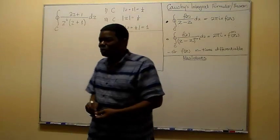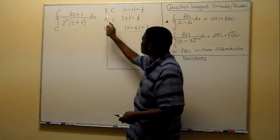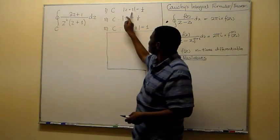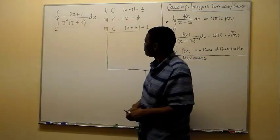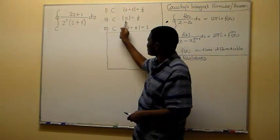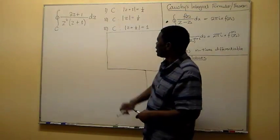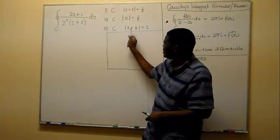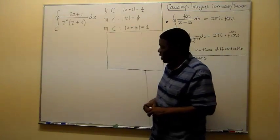For example, the first option: you have to solve this problem for contour C, which is the circle centered at minus 1 with radius one-half. The second option, you have the circle centered at 0 with radius one-eighth, and lastly centered at minus one-half with radius 1.